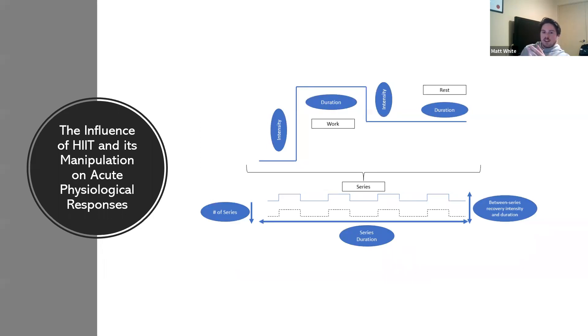Within HIIT training, you can see on the screen now, it's broken up into nine different intervals. It has a massive amount of manipulation that you can do, whether you manipulate one variable or all nine somehow. With these manipulations, it actually affects the acute physiological responses from the session. You've got work interval intensity and duration, rest interval intensity and duration, between series recovery intensity and duration, the series duration itself, and the actual total volume. There's quite a lot to think about before even looking at one session.